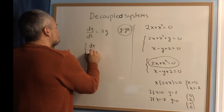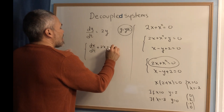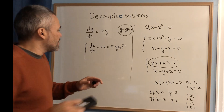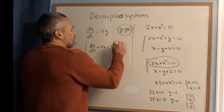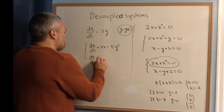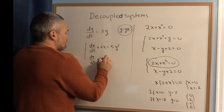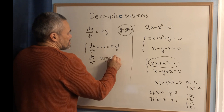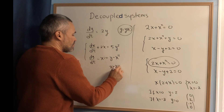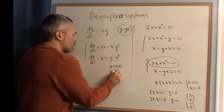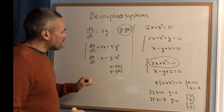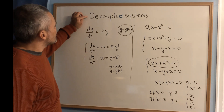We can also look for two functions, like dx/dt plus 2x equal to y squared of t, and dy/dt minus x equal to y minus x squared. Remember that in differential equations, x means x of t and y means y of t. So we are looking for two functions, which is a lot more challenging.